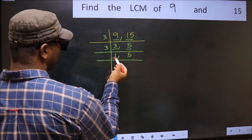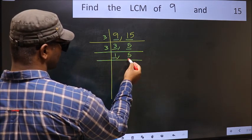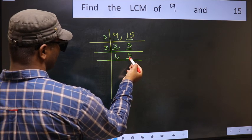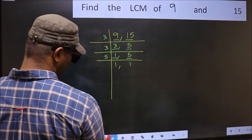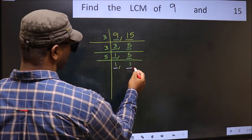Now we got 1 here, so focus on to the next number, 5. 5 is a prime number, so 5 divides 5. So we got 1 in both the places.